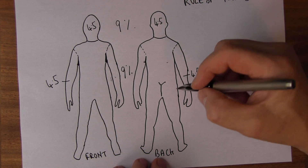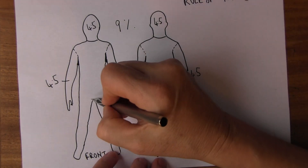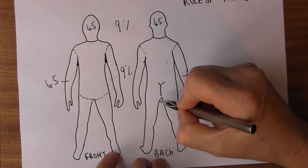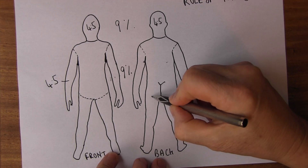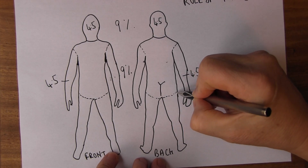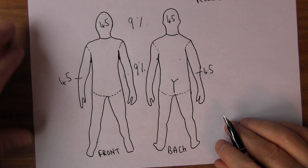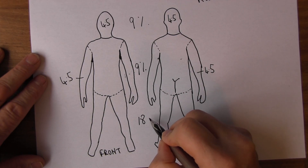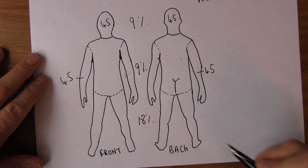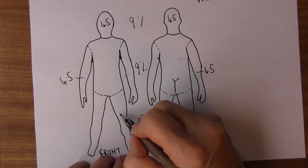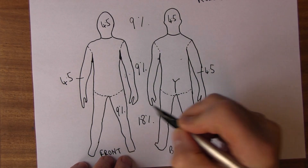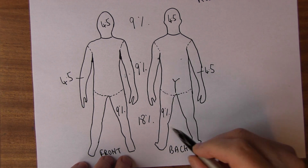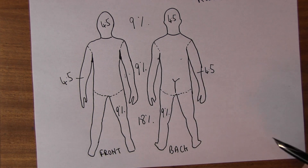The legs — again front and back. A whole leg, an entire leg, is 18%. That means the front of a leg is going to be 9% and the back of a leg is going to be 9%. Half a leg, obviously, is going to be 4.5%.